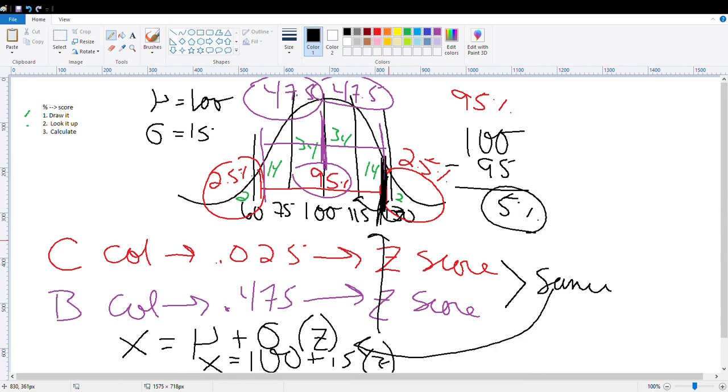Now remember, if you're trying to find the score down here, it's going to be the same Z score, because it's the two and a half percent and the 47.5%, it's just going to be a negative Z score, whereas this one's a positive Z score. So you do the same exact formula, except this time it's going to be 100 plus 15 times a negative Z score.